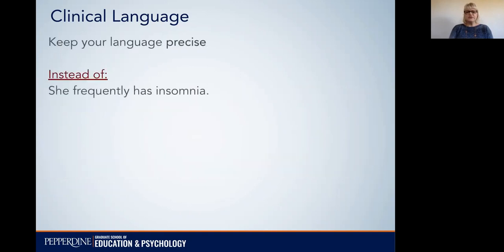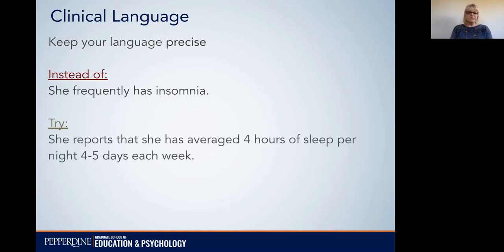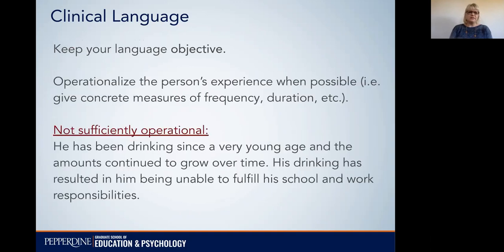Here's another example. 'She frequently has insomnia.' The problem with this is I don't know how often it happens or how many hours of sleep she gets. Here's a better example: 'She reports that she has averaged four hours of sleep per night, four to five days each week.' Now whoever is reading your report has a much clearer sense of what this person's experience is.